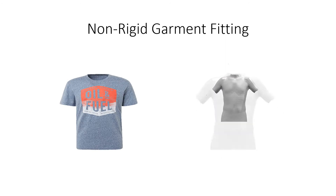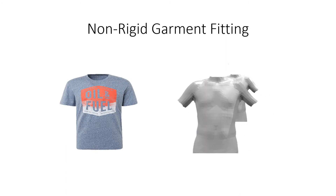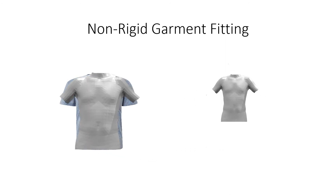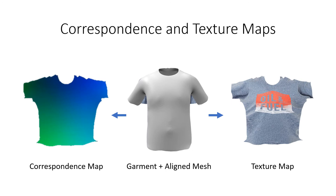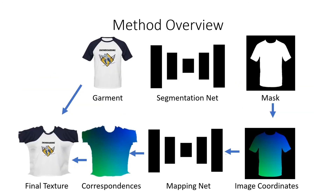To obtain data for training, we first align garment meshes with clothing images. Using these fits, we collect our dataset. We then learn a mapping that predicts the location in the input image for each point of the target UV map, using garment silhouettes only as input. We sample texture using these correspondences to produce final texture maps.